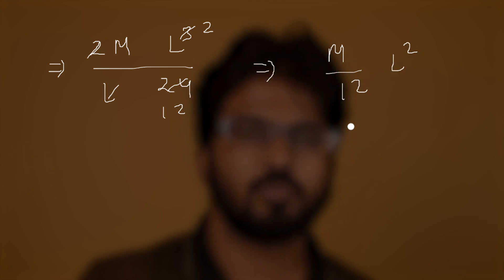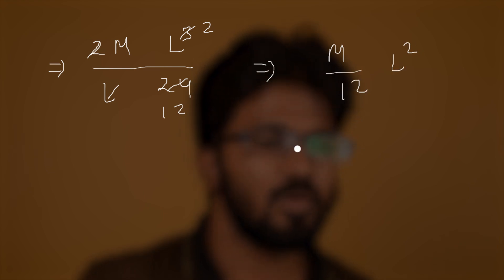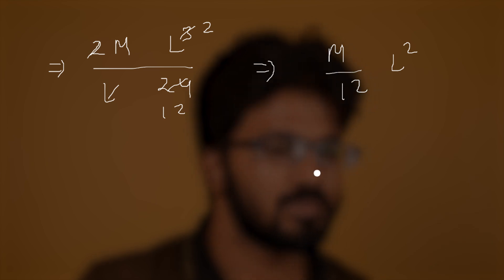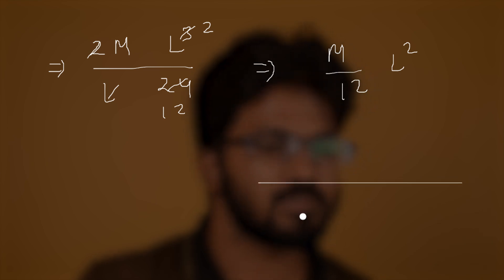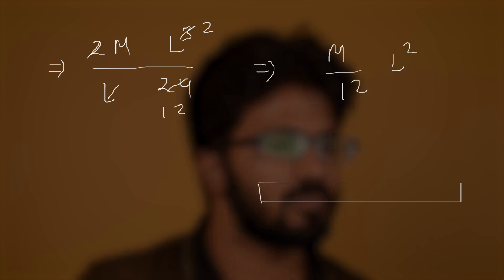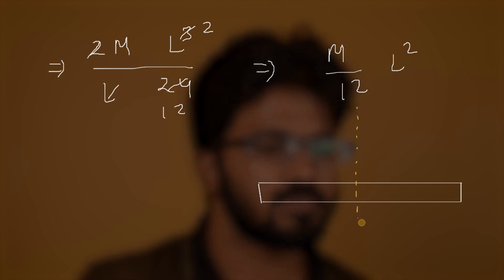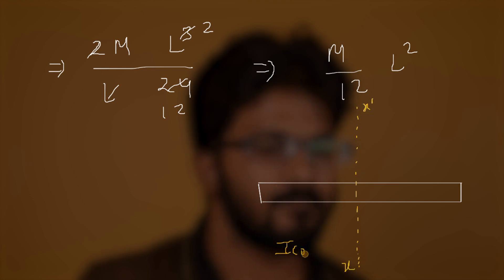This comes out to be ml²/12. This is the moment of inertia of the rod about the axis through the center of mass. So I_cm = ml²/12.